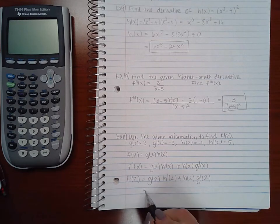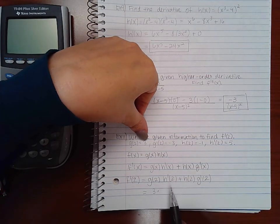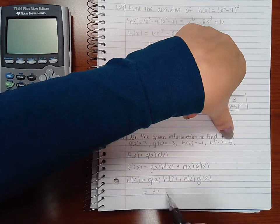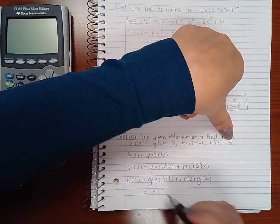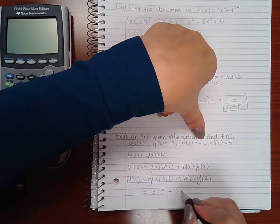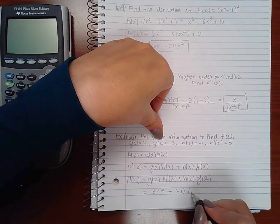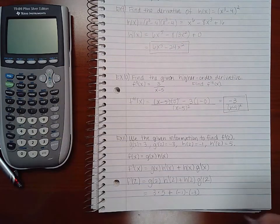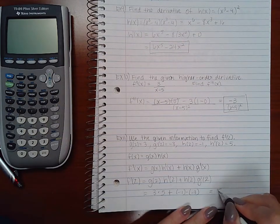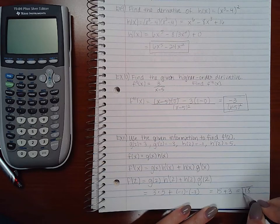And I do know these values. g(2) is 3, h prime of 2 is 5, h(2) is negative 1, and g prime of 2 is negative 3. So we end up with 15 plus 3 which equals 18.